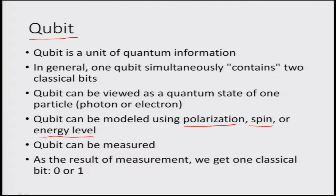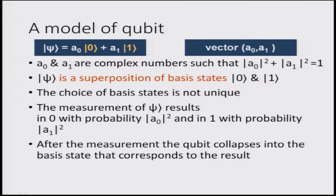As the result of measurement, we get one classical bit — 0 or 1. The model of a qubit uses the 0 and 1 states to give rise to the wave function psi. We have approached this problem in terms of vector algebra with the coefficients a₀ and a₁, which are complex numbers such that the sum of their mod-squared equals 1. These coefficients contain the contribution of each of the states that are possible in the quantum state.